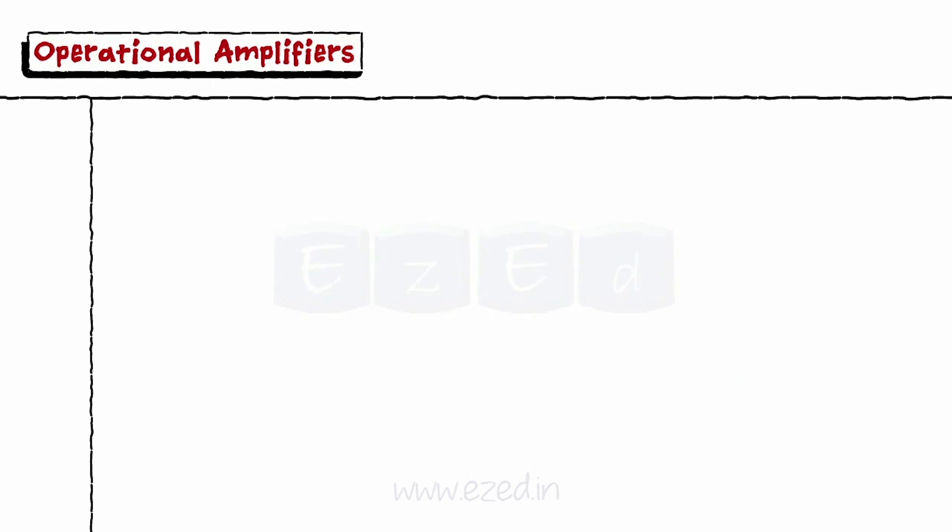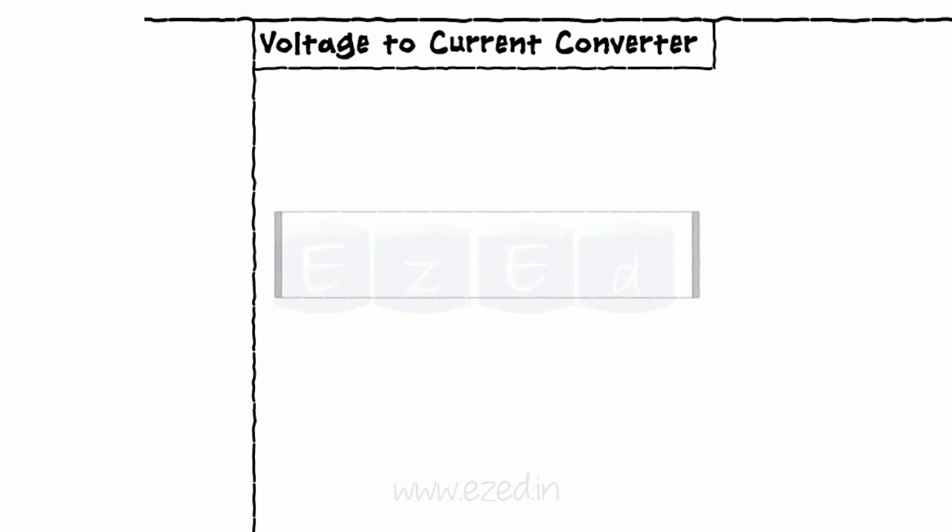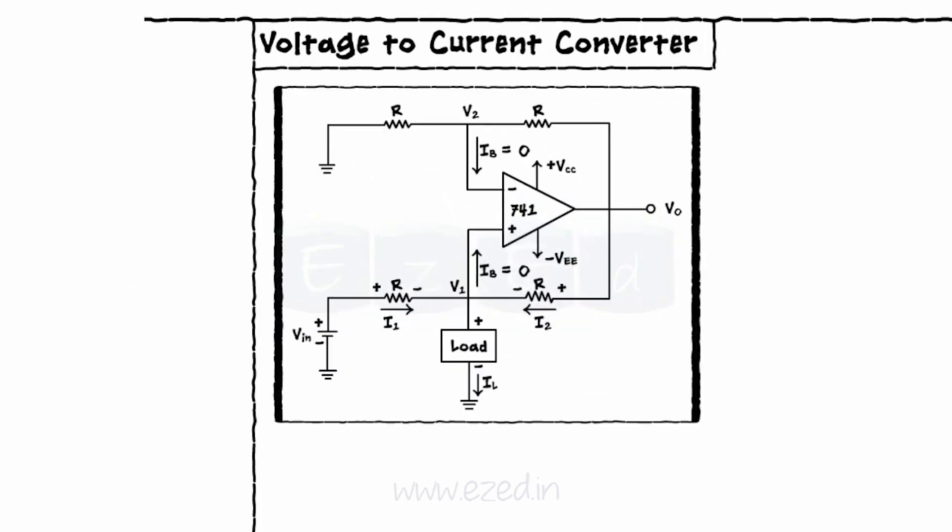The next application of an op amp is as a voltage to current converter. In this, we represent the output current in terms of an input voltage. The circuit of the voltage to current converter is as shown.